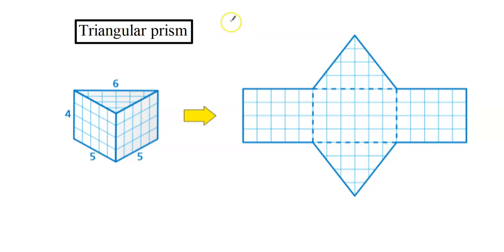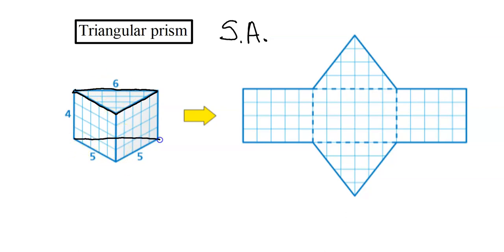Today's lesson is about triangular prisms. We've already learned how to find the surface area of a rectangular prism, and today we're looking at triangular prisms. This polyhedron, this three-dimensional figure, is named for the shape of its face. You see a triangle at the top and there's another triangle on the bottom that you can't see. Because it has triangular bases, it's called a triangular prism — it's named for its base.